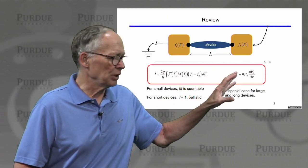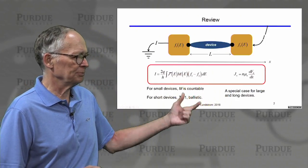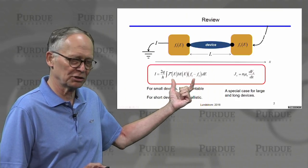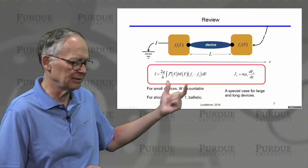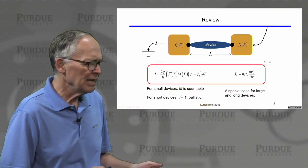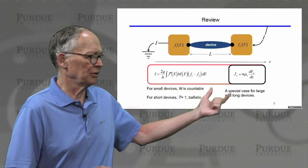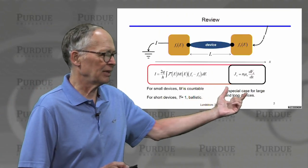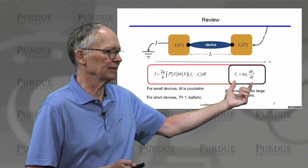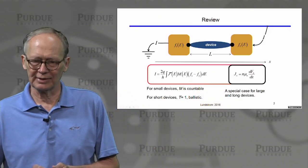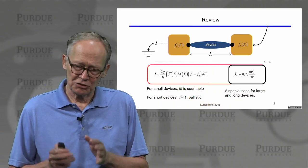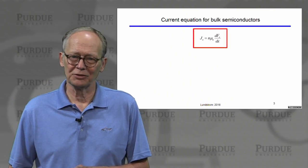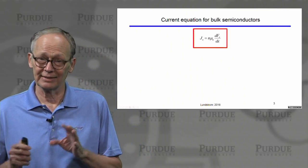This is our treatment of carrier transport. We have this fundamental Landauer expression that describes large devices, small devices, or devices in between. And we have this special case that describes bulk semiconductors. Most of semiconductor physics and the understanding of semiconductor devices is based on an equation of this kind, but it's usually presented in a different way, and we want to understand that way in this lecture.